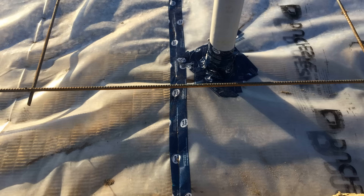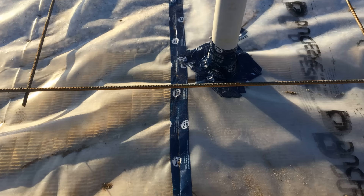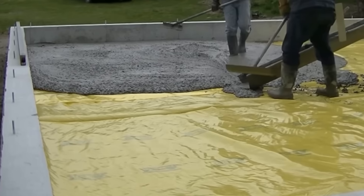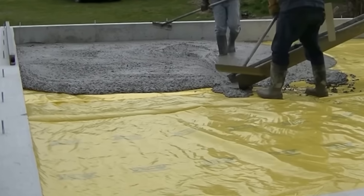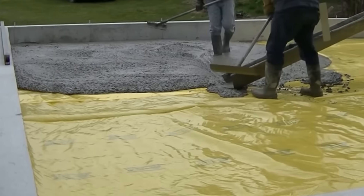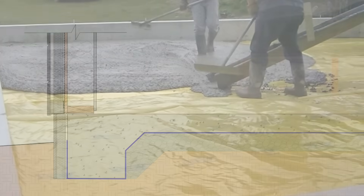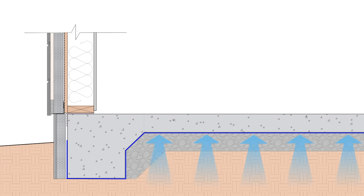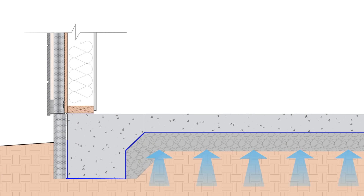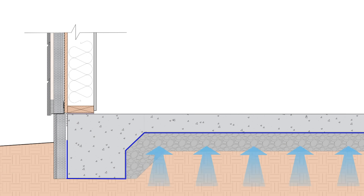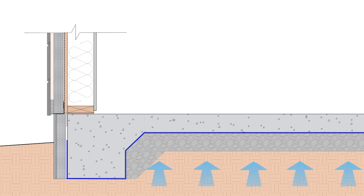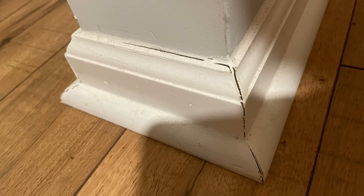Back to vapor barriers in the context of a slab-on-grade. We use sheets of polyethylene or plastic for our vapor barrier beneath the slab to prevent moisture from the damp soils from drying through the slab into our homes and buildings, since this can raise relative humidity levels and increase the moisture content of the slab itself. This is very important to preventing mold growth, condensation, and warping of our interior finishes.